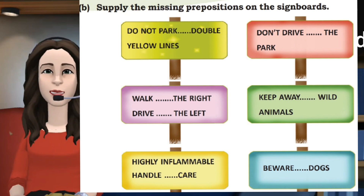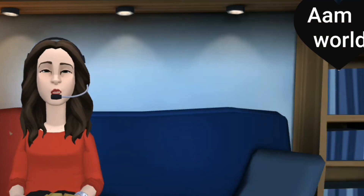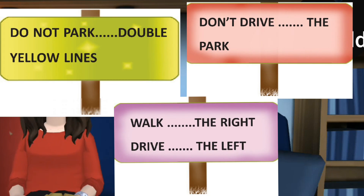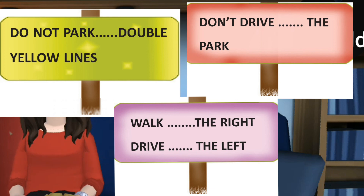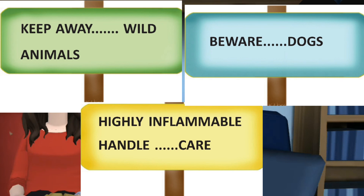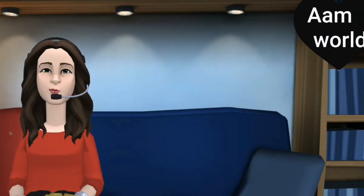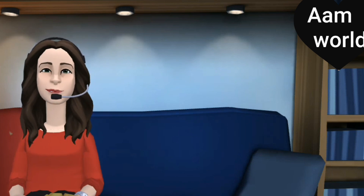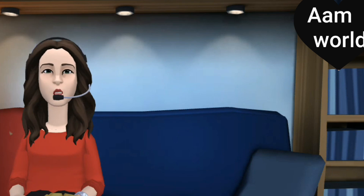Next question of activity 13: Supply the missing prepositions on the signboards. The signboards given are: 'Do not park — double yellow lines', 'Don't drive — in the park', 'Don't drive — the park', 'Walk — the right', 'Walk — the left', 'Keep away — wild animals', 'Highly inflammable, handle — care', 'Beware — dogs.' We need to complete these signboards by writing the appropriate prepositions.